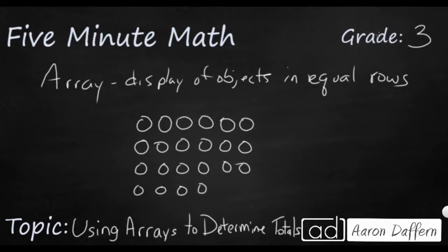Now, if I wanted to know how many circles I have all together, first I can say this is a four by six array because I've got four rows and there are six circles in each row, or six columns.